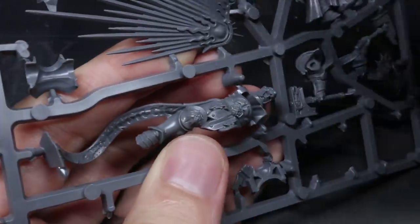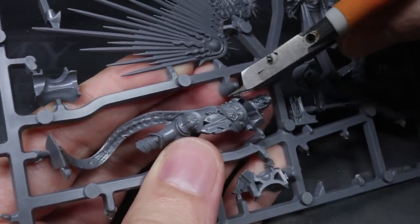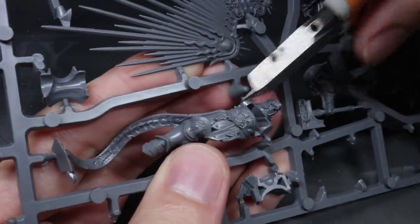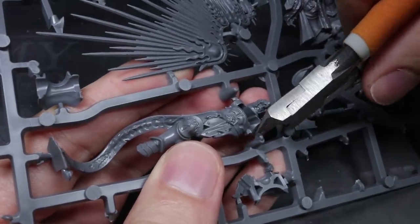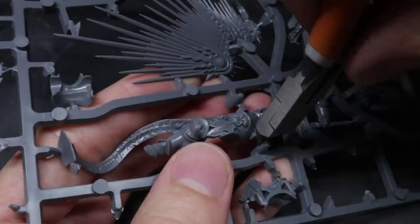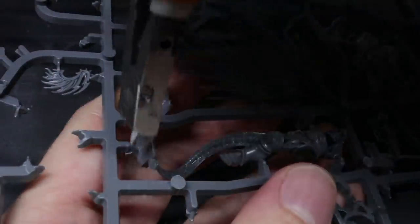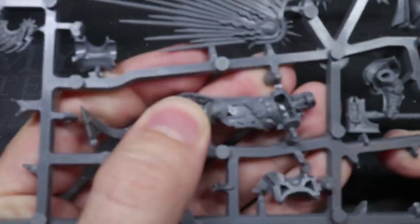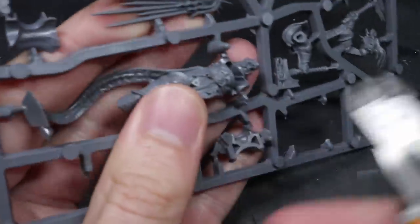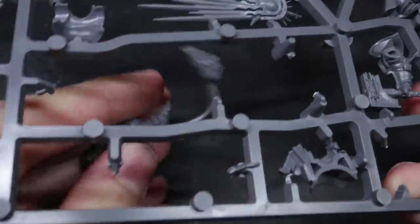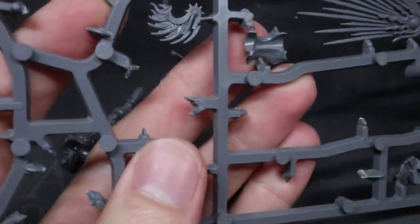After my recent Gabriel Angelos conversion guide, I asked you guys to suggest what well-known character you would like to see me bring up to date. After a huge amount of suggestions I managed to whittle it down to 5 and it was Dante that won by a clear lead. I'm Pete the Wargamer and today I'll be showing you how to convert a Primaris version of Commander Dante of the Blood Angels.